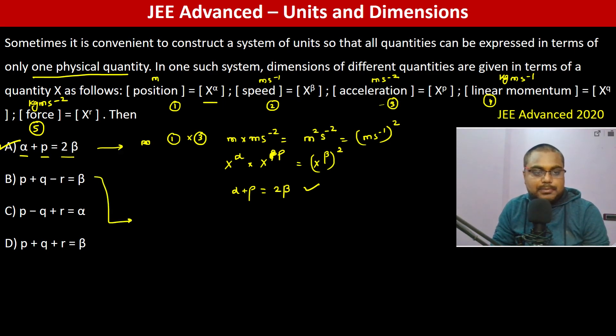Now checking the other one: p plus q minus r equals beta. P is 3, q is 4, r is 5. So kg ms⁻² into kg ms⁻² divided by kg ms⁻¹. Kg cancels out.